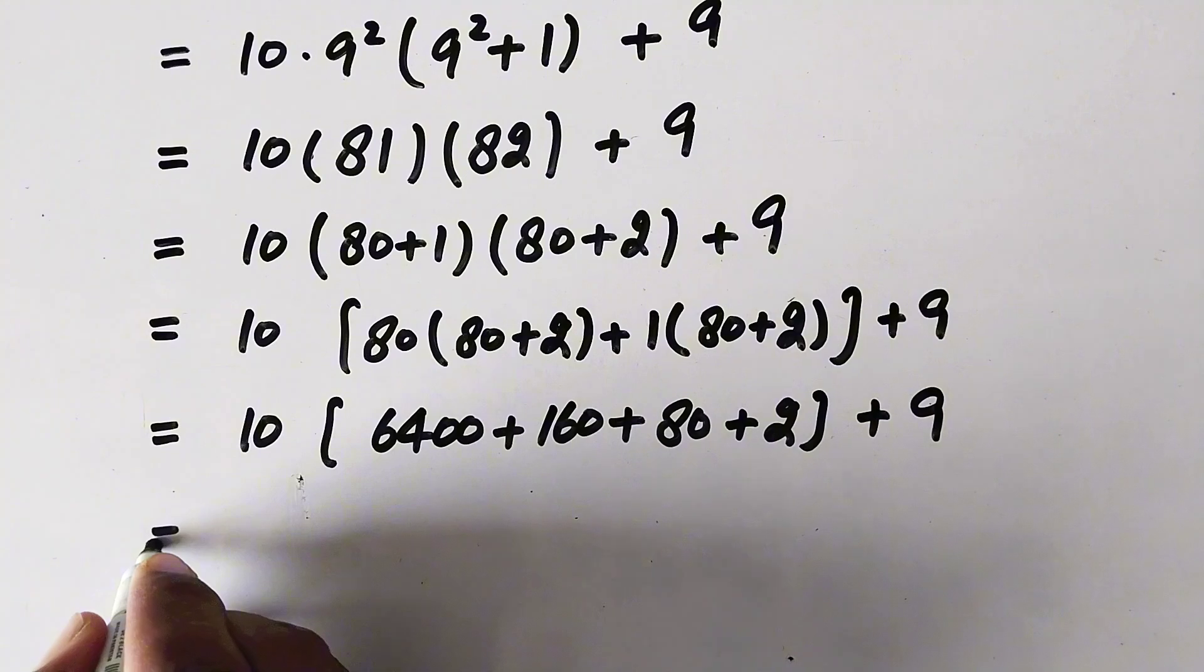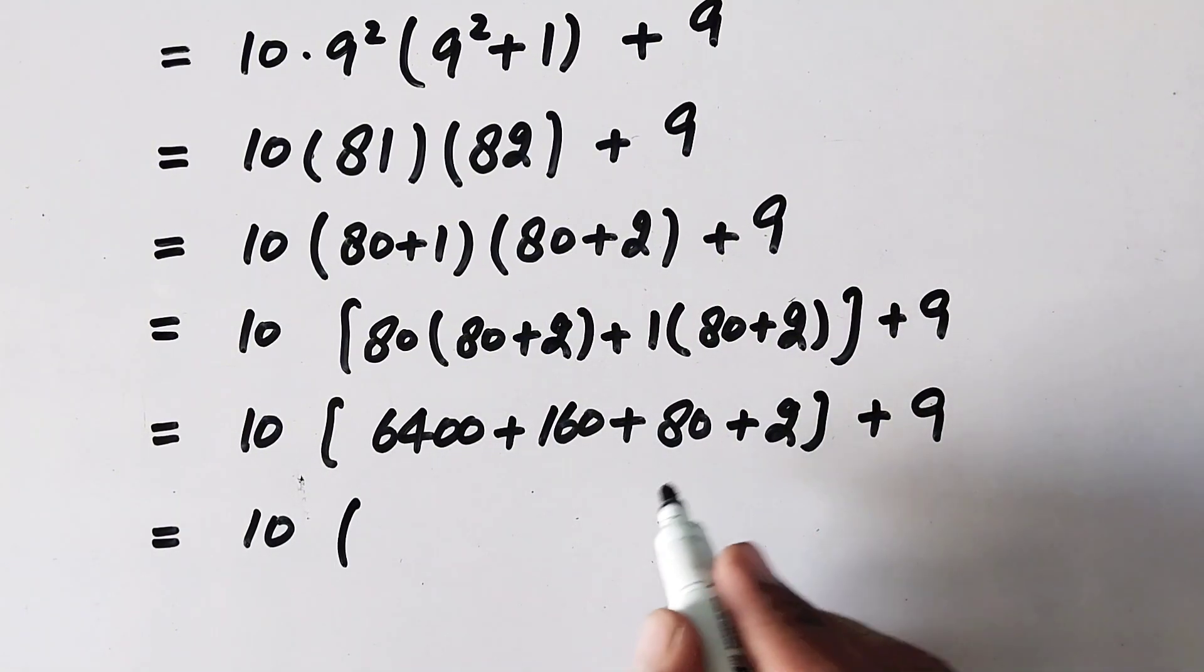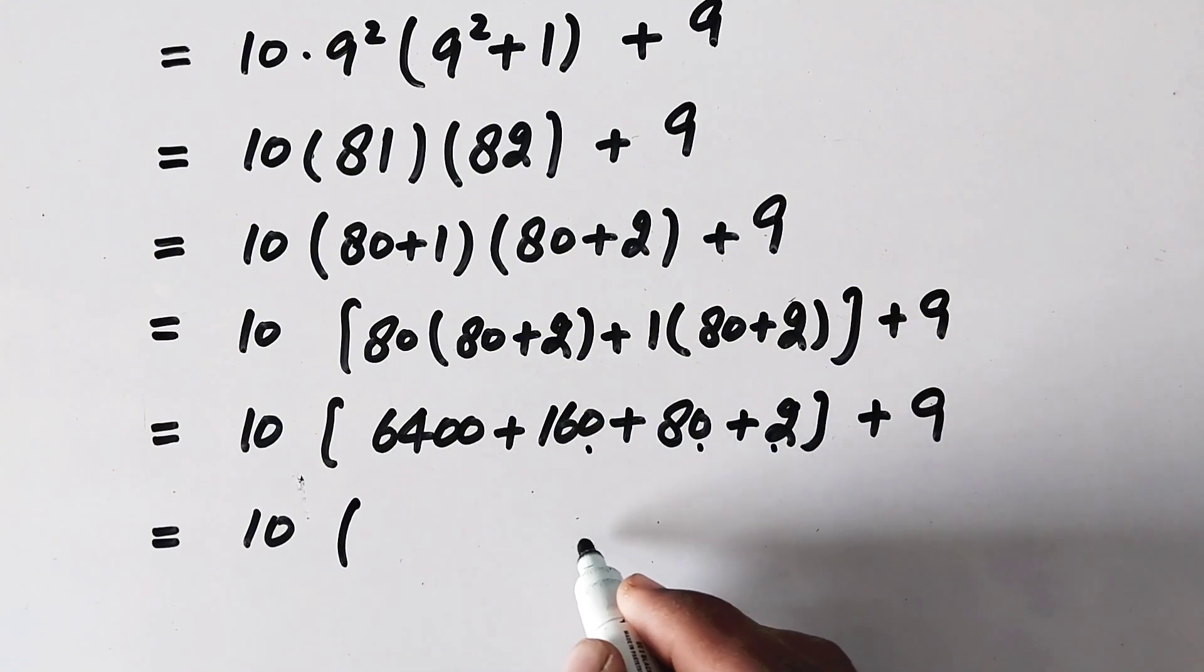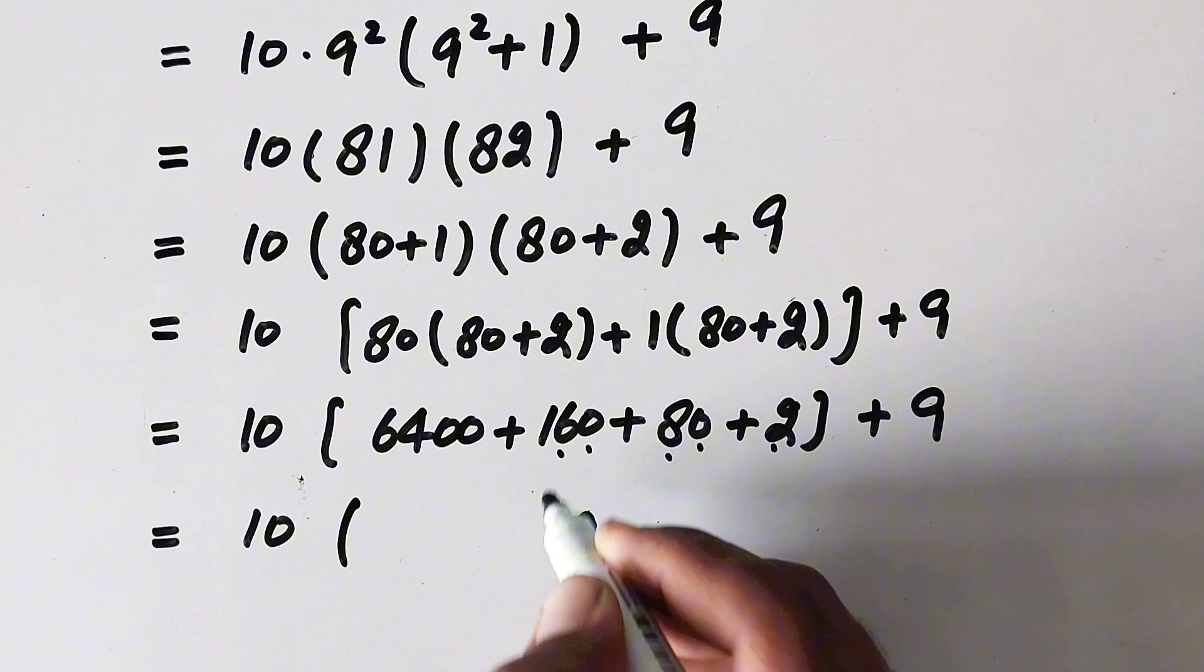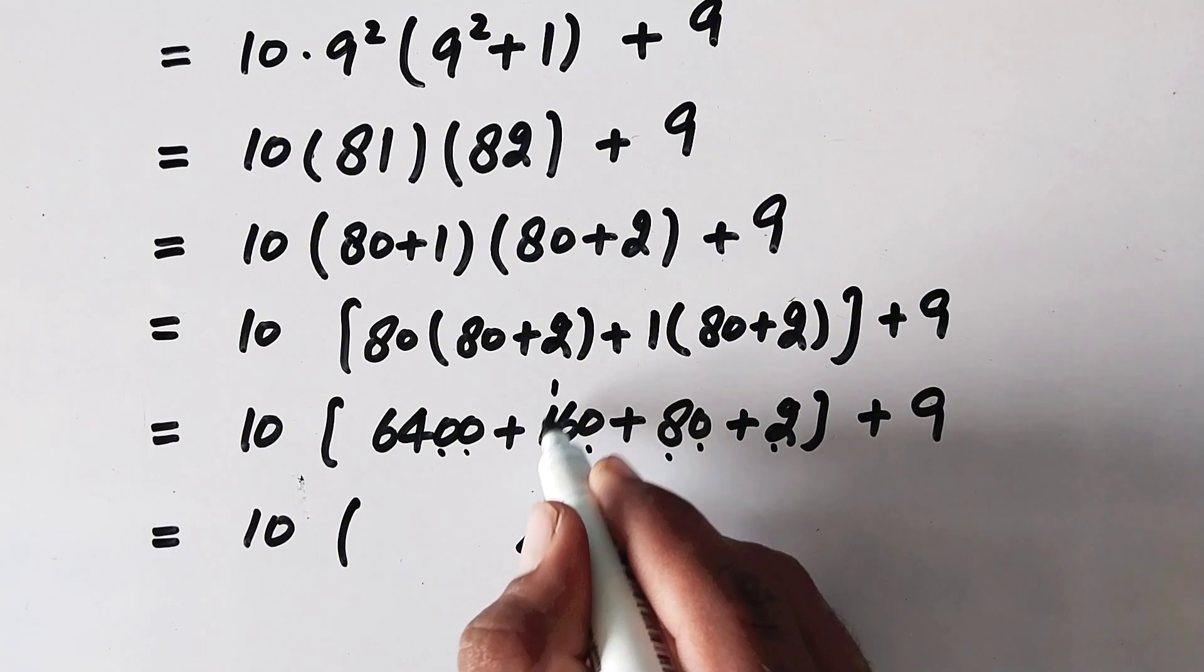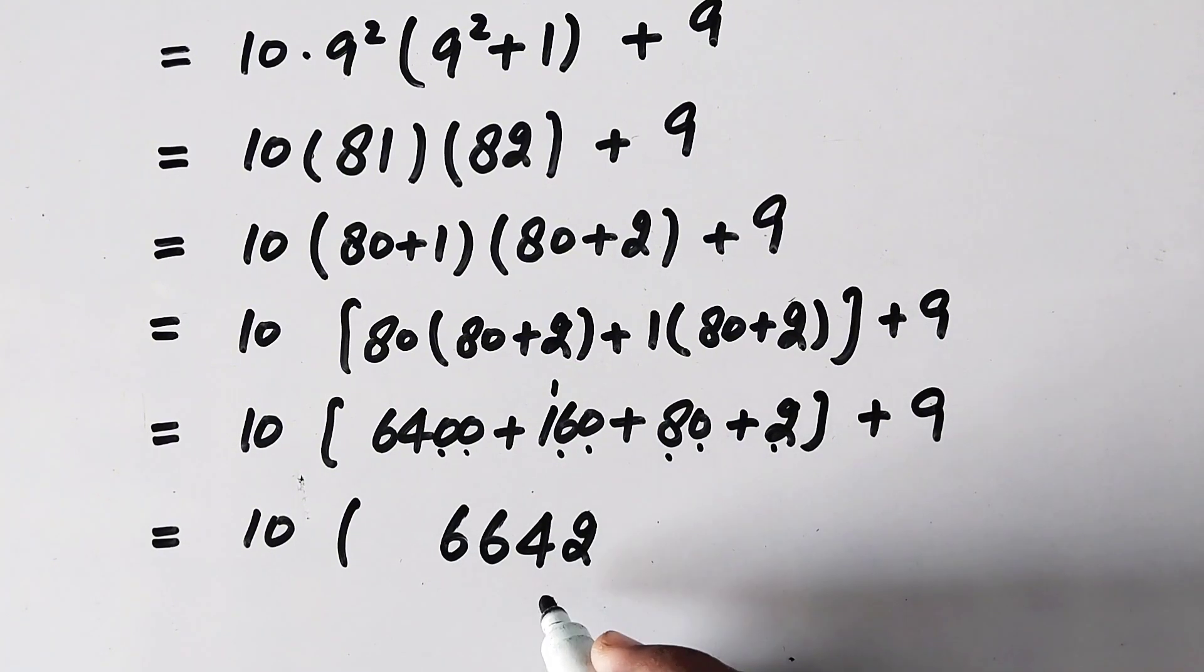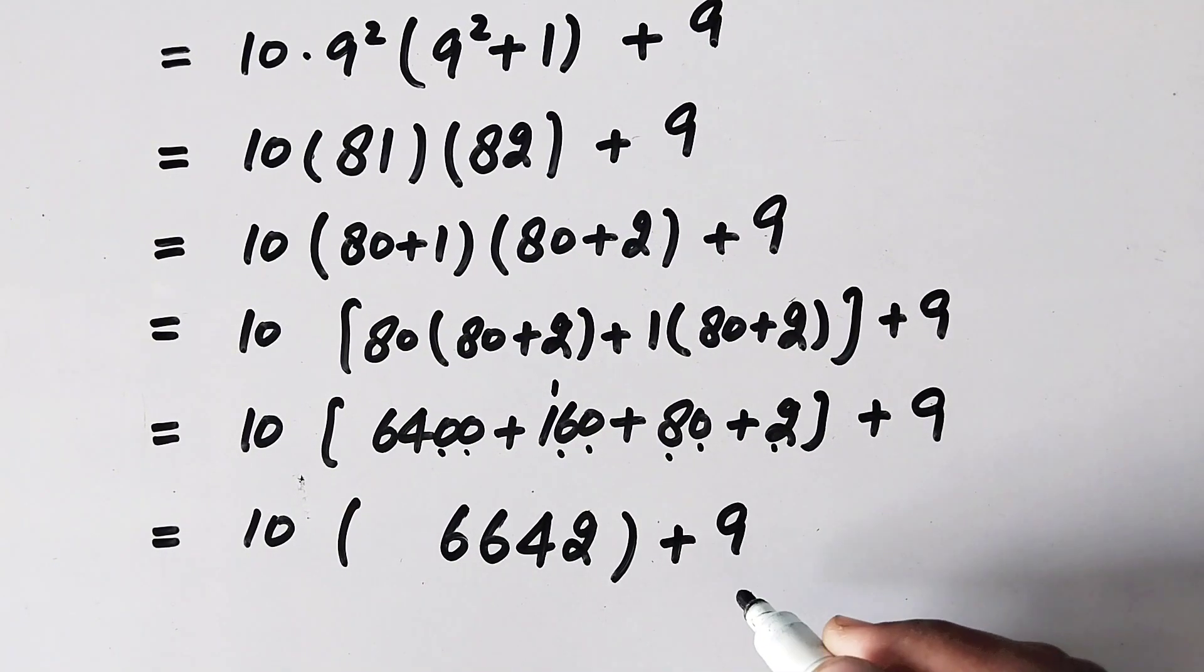Now here 10 times, 6400 plus 160 plus 80 plus 2 is 6642, plus 9. That's 6642, then 1 is carried, 1 plus 1 is 2 plus 4 is 6, and here is 6.